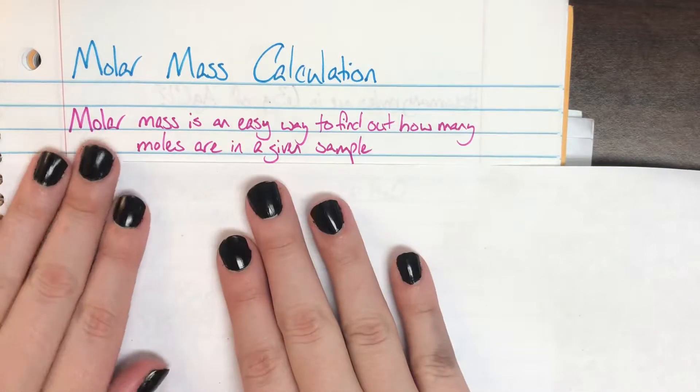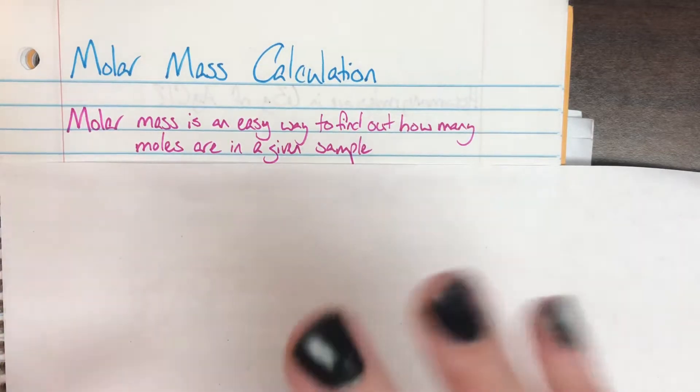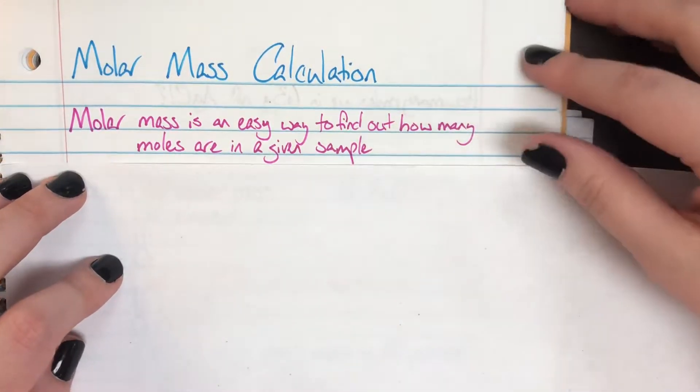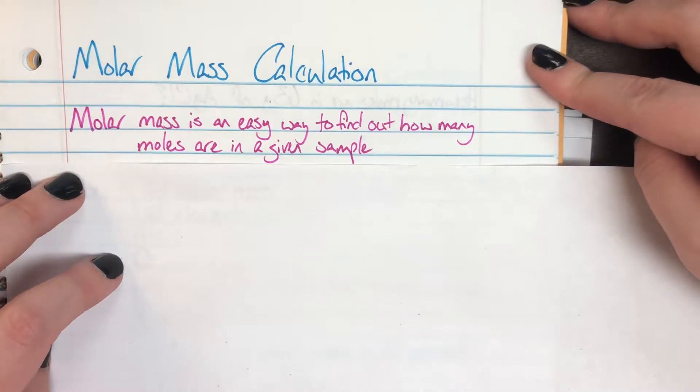So molar mass is going to be able to give us that bridge so we know exactly how many atoms we're dealing with, and we just need to know how to calculate it.